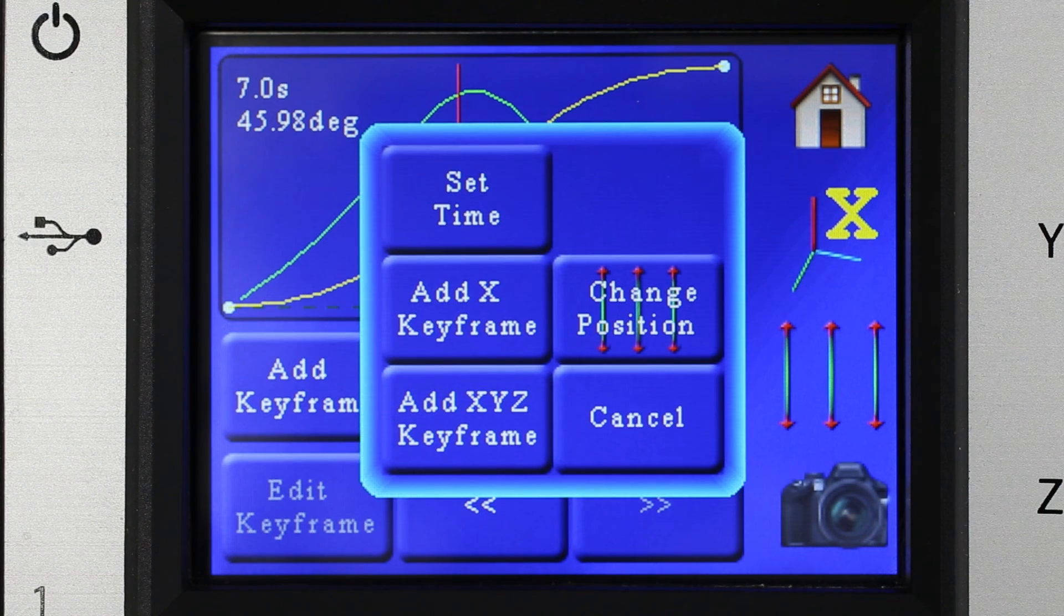So here you're given a list of options. We've already set the time to seven so we want to set the keyframe there. We can either add it just on the x-axis or we can add it on all three. So if you've adjusted the positions of everything then you can add with one button press a keyframe across the board. For this setup we're going to add a keyframe just to the x-axis.